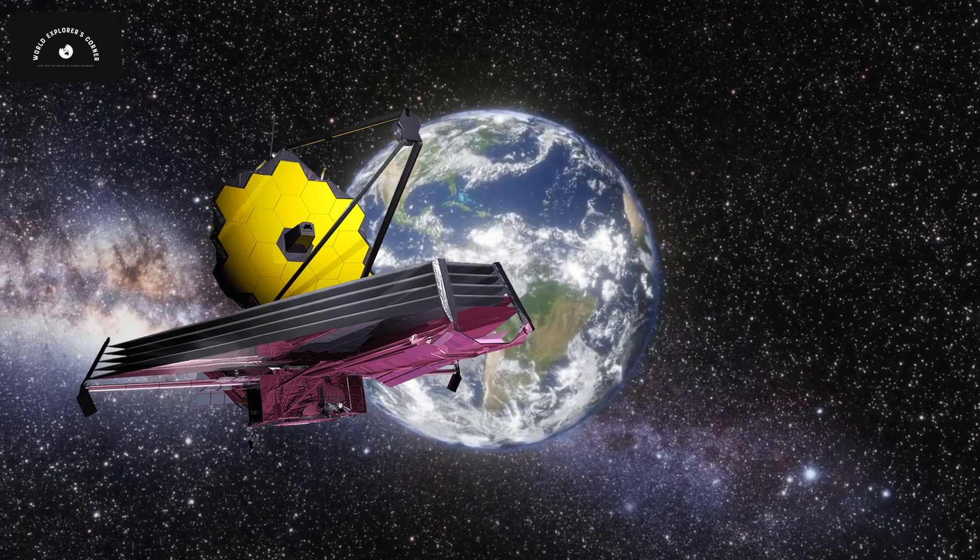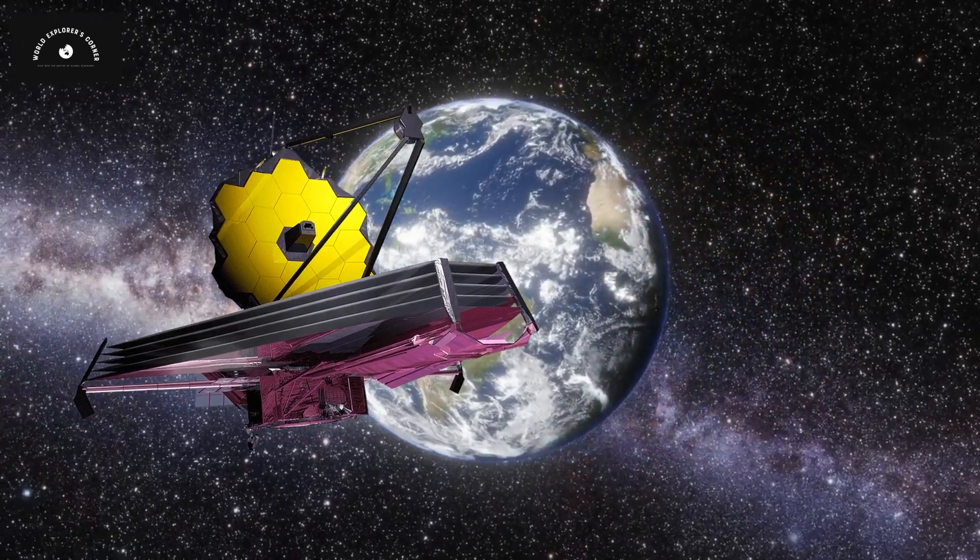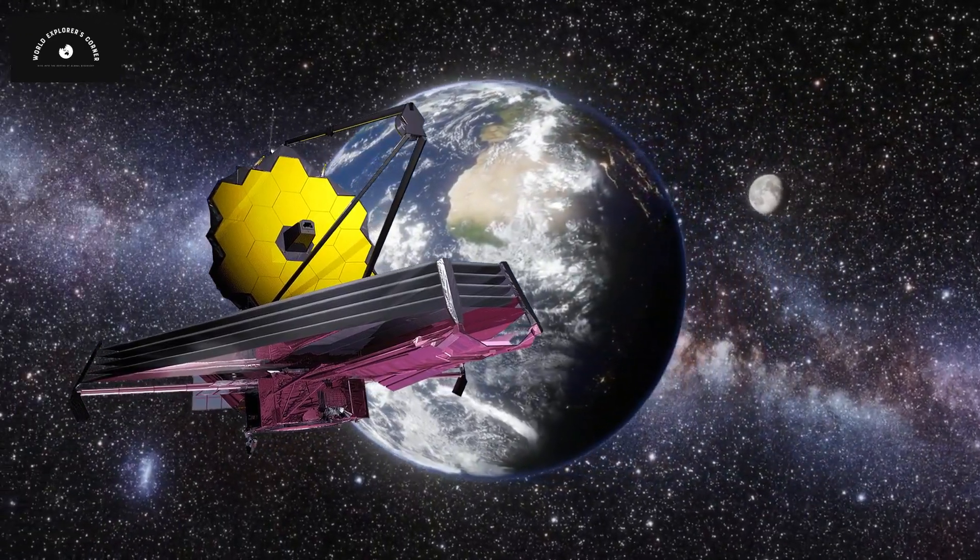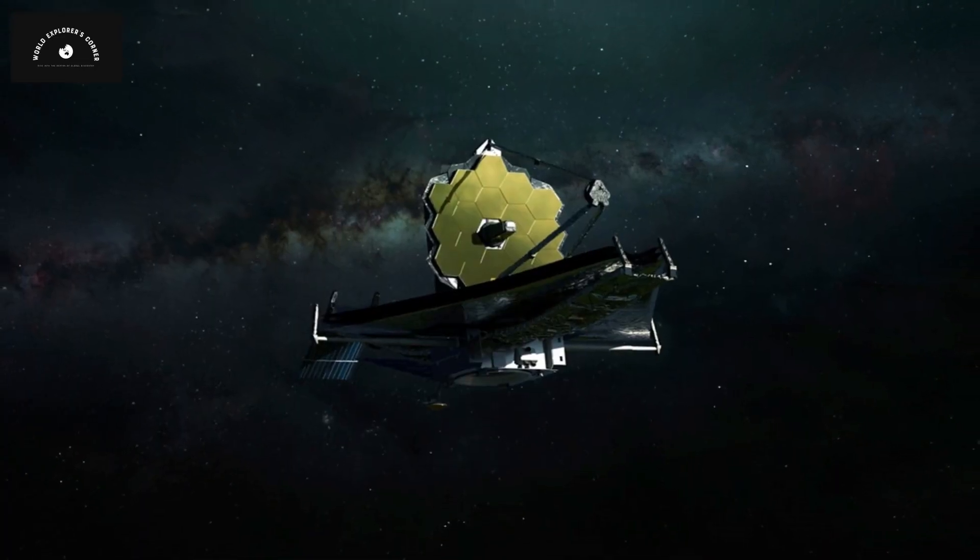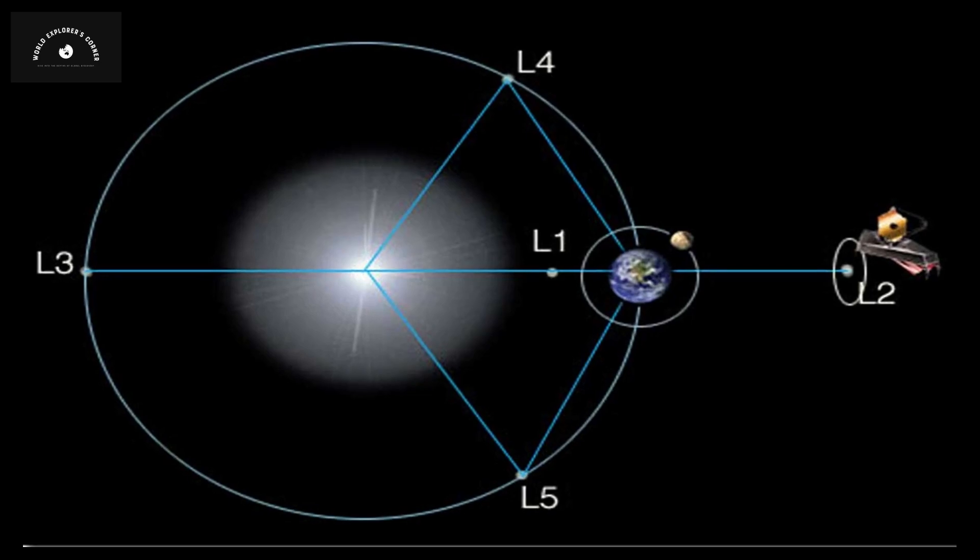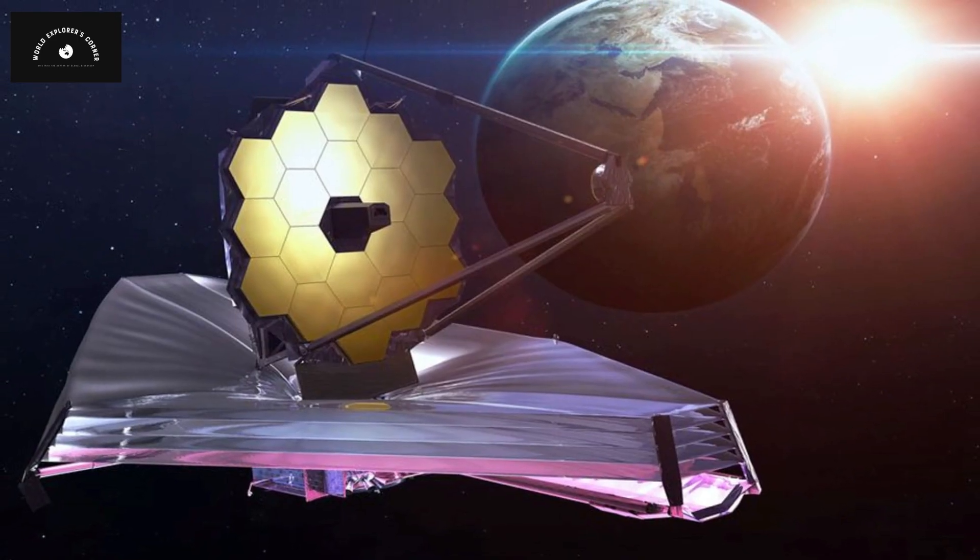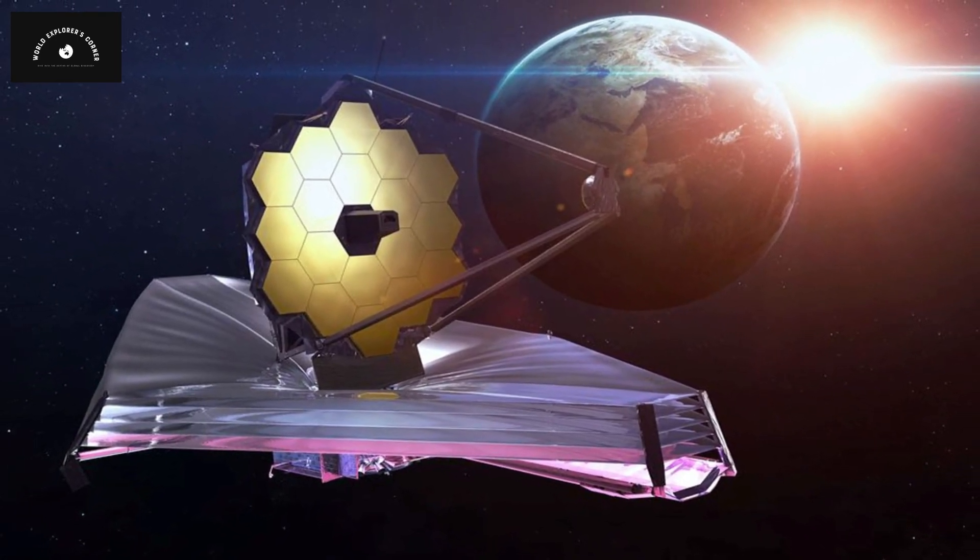Currently, the James Webb Space Telescope is located 1.5 million kilometers away from our Earth. This telescope is continuously orbiting at the L2 point of the Earth, a location where the light from the sun cannot reach the telescope.